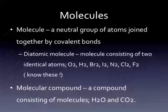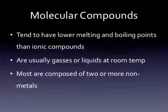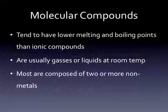Molecular compounds tend to have lower melting and boiling points than ionic compounds, which means at room temperature they're usually going to be gases or liquids. If you look at the periodic table, most of the non-metals are shown in red. Red means they are gases, blue means they are liquid, and black means they are solid. So molecular compounds tend to be gases or liquids at room temperature, which makes sense because most of our non-metals are gases and liquids.